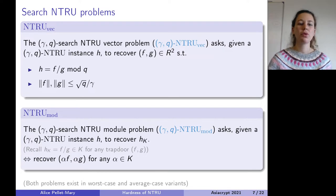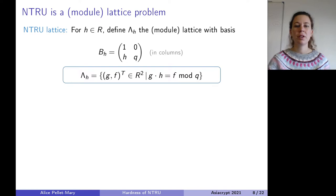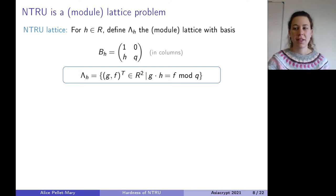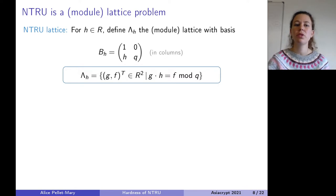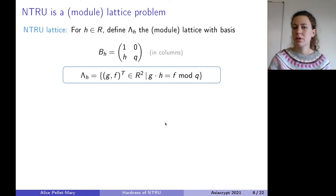Let me comment on how NTRU is a lattice problem. I'll introduce the lattice behind the NTRU problems. This is a module lattice of rank 2. If you're not familiar with module lattices, take R = Z, and this is just a lattice of dimension 2 over the integers. A basis of the lattice Lambda_H — associated to some element H in the ring R — has the property that you can define it as the set of all vectors (G, F) such that G times H equals F modulo Q.